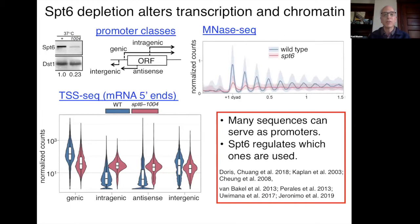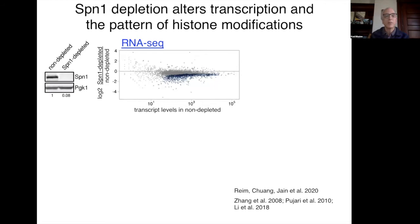Now I want to talk about Spt1 (SPINDOC), which we think is different from SPT6. Spt1 has been studied primarily by the Stargell and Carolyn Luger labs, and a lot has been learned from their studies. We wanted to understand what happens to gene expression and chromatin structure when we deplete Spt1. This was done with auxin-inducible depletion, and when Natalia Rehm did RNA-seq, we saw that approximately 1,500 RNAs are reduced in level in the mutant.